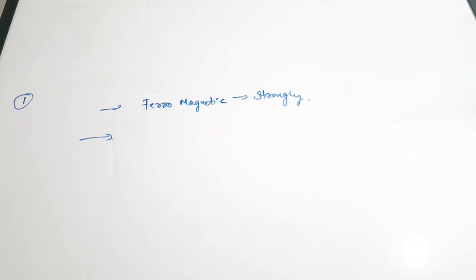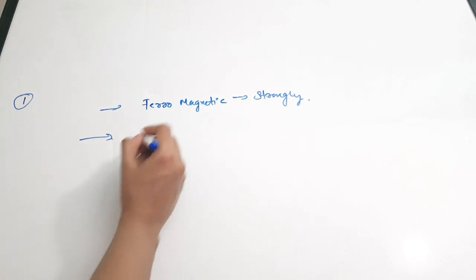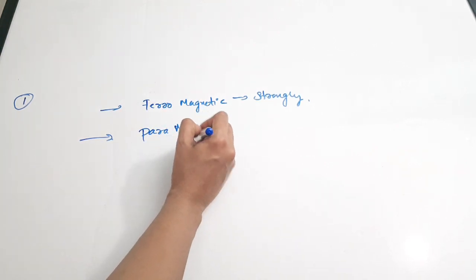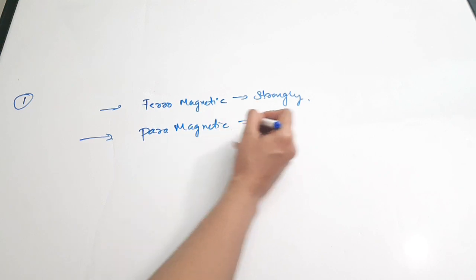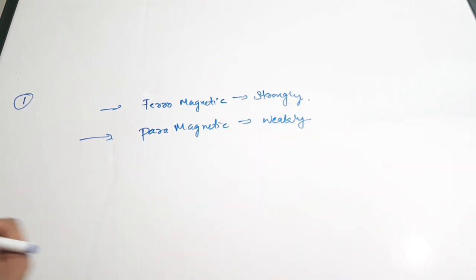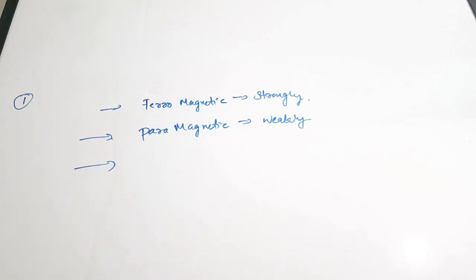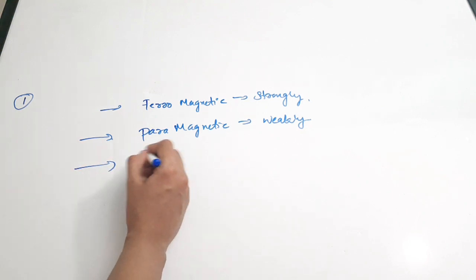Paramagnetic is a form of magnetization where some materials are weakly attracted by an externally applied magnetic field — that means they can only be weakly magnetized. The magnetic force of attraction experienced by those materials will be weak only, so that type of material is called paramagnetic material. The second option is diamagnetic.